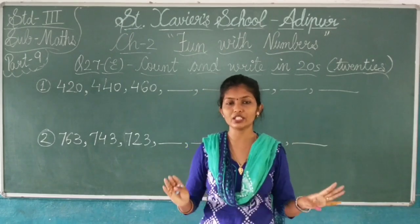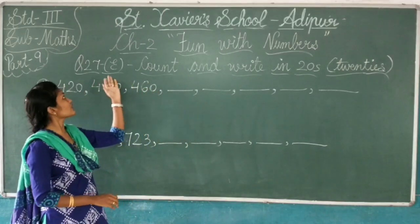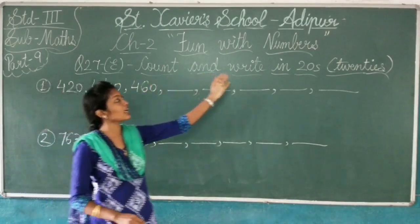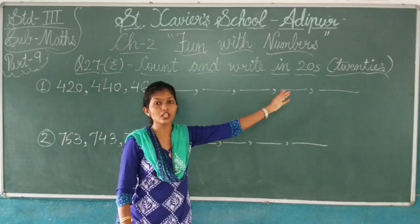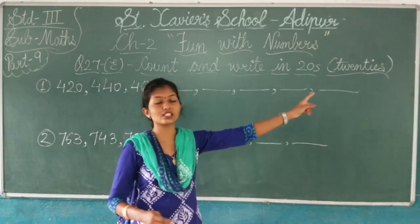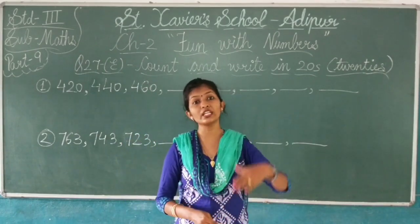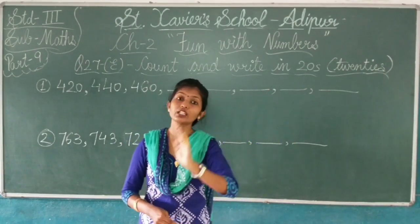Hope everything is completed with you. Now today we are going to start question number 27E, that is count and write in twenties. We have done tens, now we are going to see the twenties. That means you have to increase in the count of twenties.